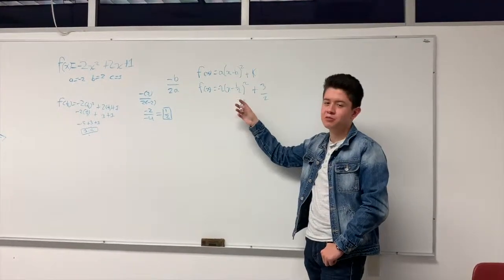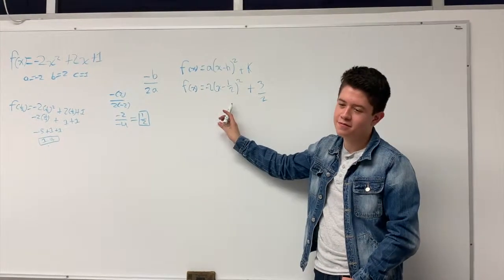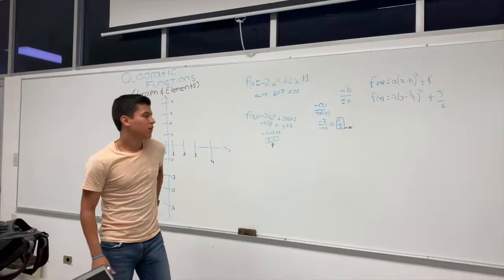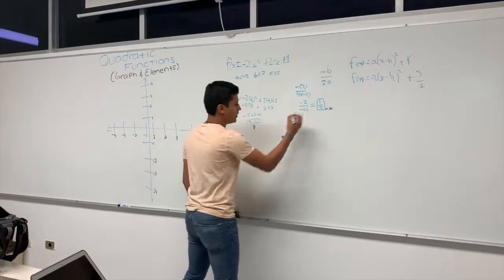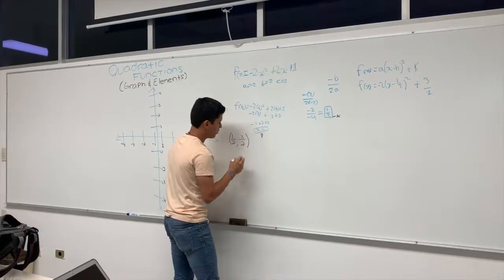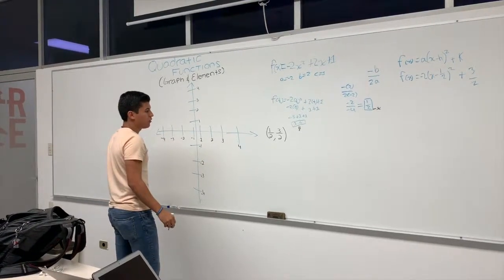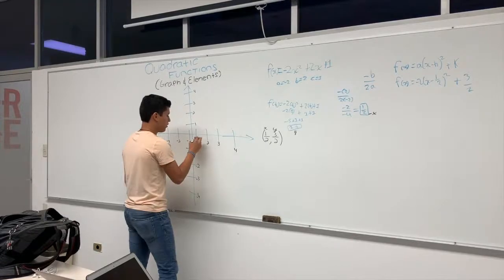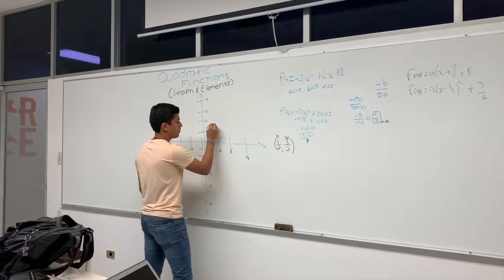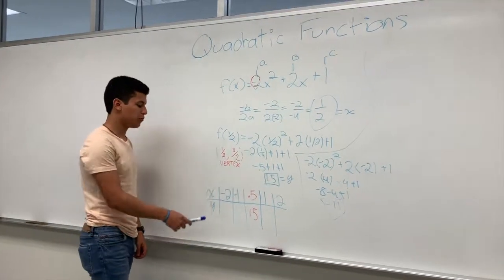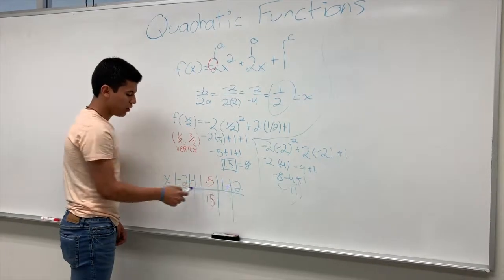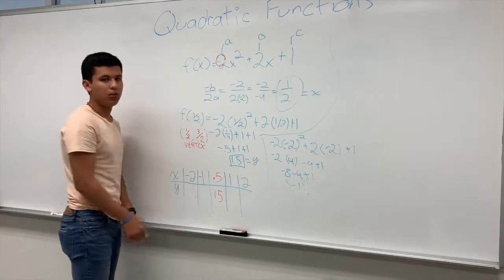With this formula we can determine if the graph is going to be wider or narrower, and now we are able to graph. With the two coordinates (1/2, 3/2) we can place the vertex. We put x equals one half and y equals three halves on the graph. We also put in additional x-values — like negative 1 and 1 and 2 — to get other y-points so we can plot the parabola.